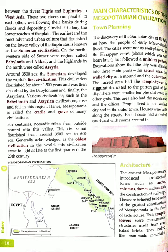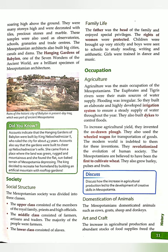Their temple towers were monumental — very big or massive — structures made from sun-baked bricks, meaning bricks dried by the sun's heat. They look like man-made mountains soaring high above the earth. They were many storeys high and were decorated with tiles, precious stones, and marble.